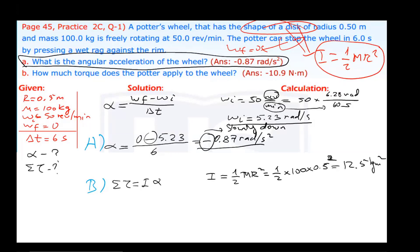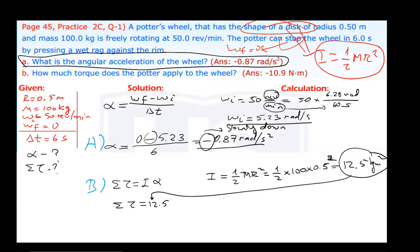Now we can calculate net torque. Net torque equals I times angular acceleration. I is 12.5, and angular acceleration is negative 0.87 — don't forget the negative sign. Multiplying these two numbers: 12.5 times negative 0.87 equals approximately negative 10.9. Net torque is equal to negative 10.9, which rounds to negative 11 Newton meters.